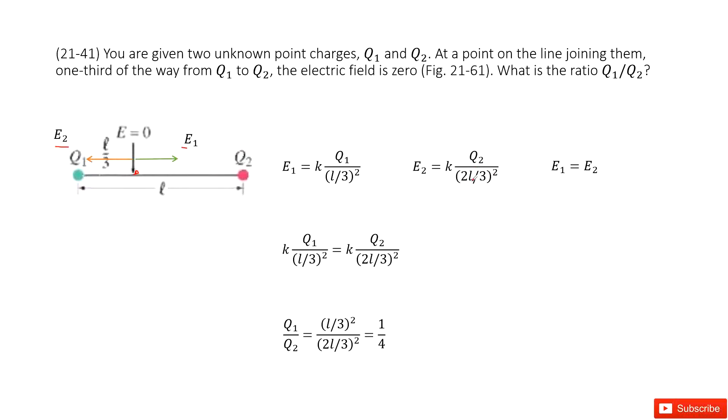The distance is 2l over 3. Since the magnitudes of E1 and E2 are equal, we can write E1 equals E2 and solve this equation. The k terms cancel, so the ratio q1 over q2 is 1 over 4.